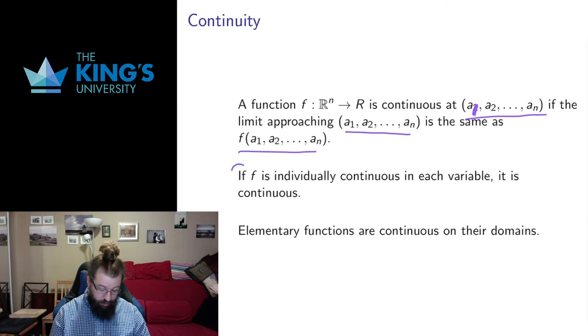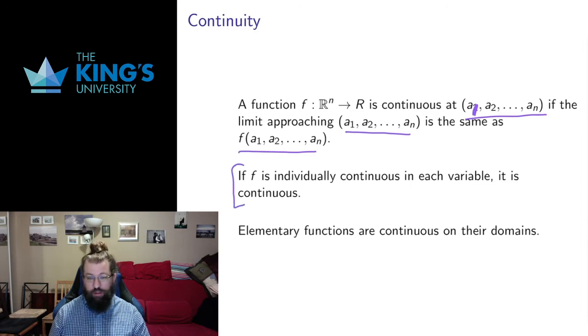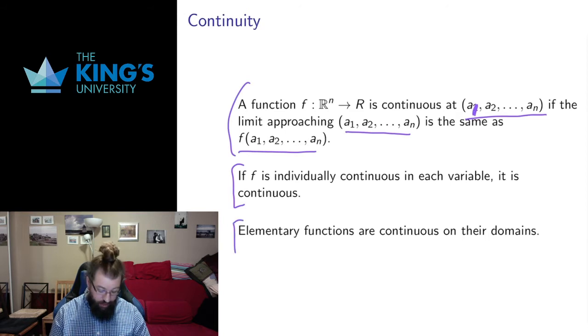We have a nice result here that we can actually check continuity in each variable. If f is individually continuous in each variable, we sort of pretend that only the first variable counts and then only the second variable counts. If we have continuity in all of the variables individually, we actually have continuity in this more general sense as well. That means that we can make use of a lot of our single variable results about continuity.